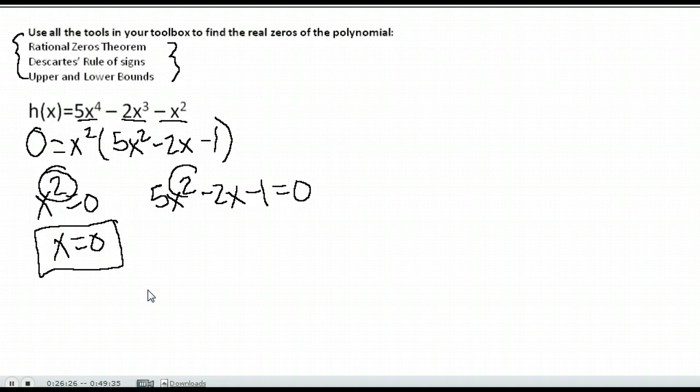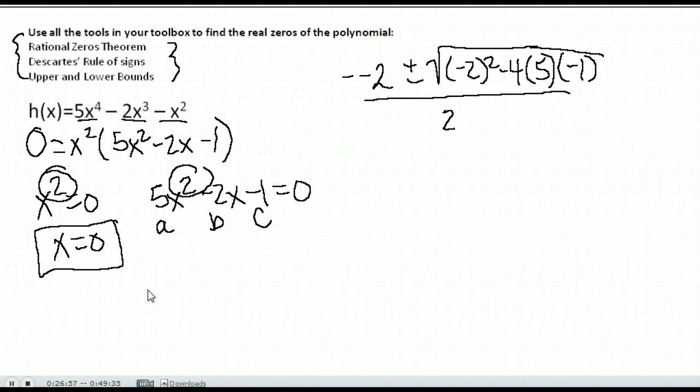This one here, I would factor if it factors, because notice it's a squared term. So I'm not going to have to mess with rational zeros because we know that squares, we can either factor or use a quadratic formula. This does not factor, so we use the quadratic formula. So there's my A, my B, and my C. So I have negative of negative 2 plus or minus the square root of negative 2 squared minus 4 times A with 5 times C with negative 1. When you're doing the quadratic formula, always be super careful with your sign. Negatives can mess you up.